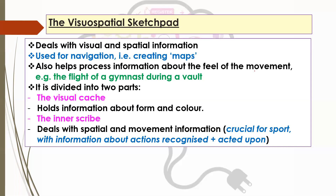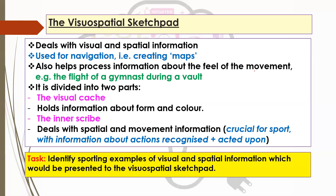One of the key things with the inner scribe is that this information will enable you to recognise sporting actions and techniques being performed, and then decide on an appropriate action. For example, you can see how an opponent in boxing might be shaping up to punch, and then you decide based on that — the initial part of that process is the recognition of what's going on. Identify sporting examples of visual and spatial information which would be presented to the visuospatial sketchpad — pause the video and try and come up with a list.